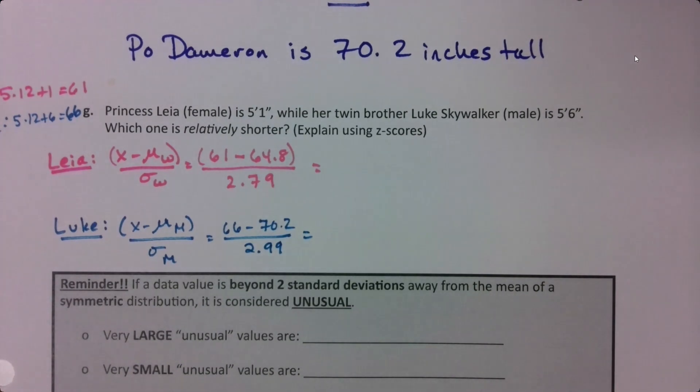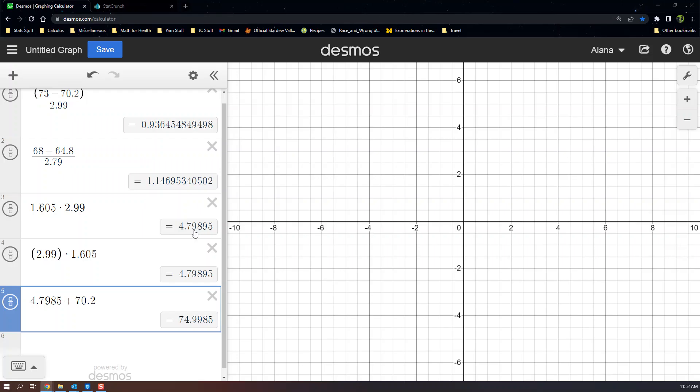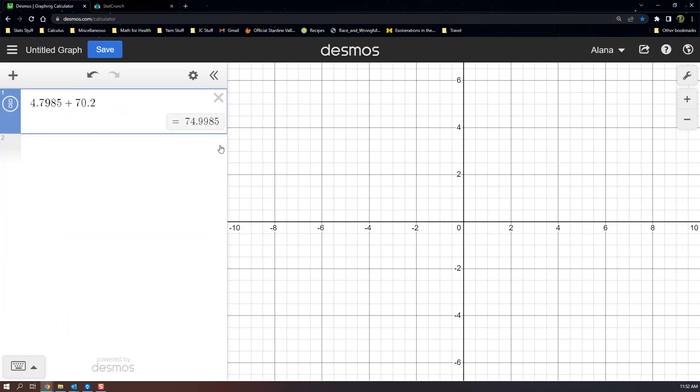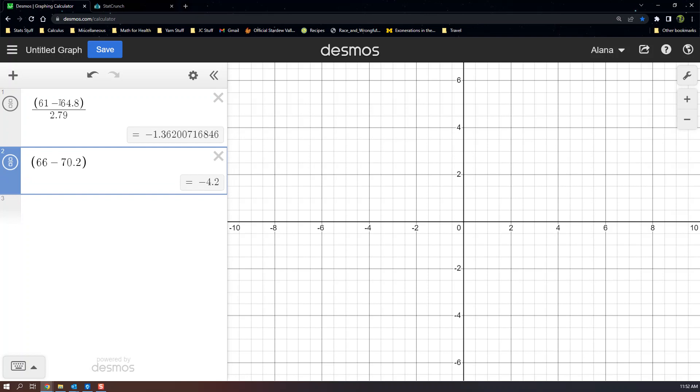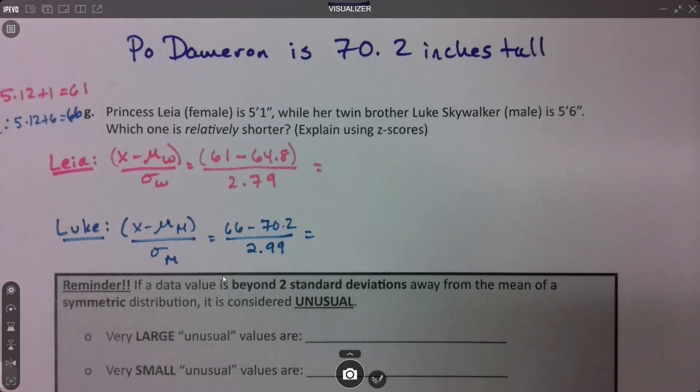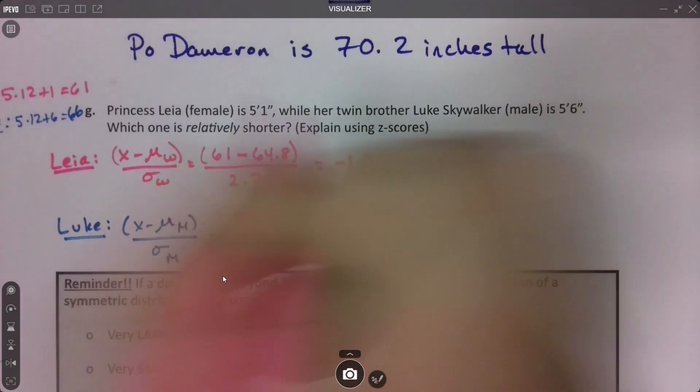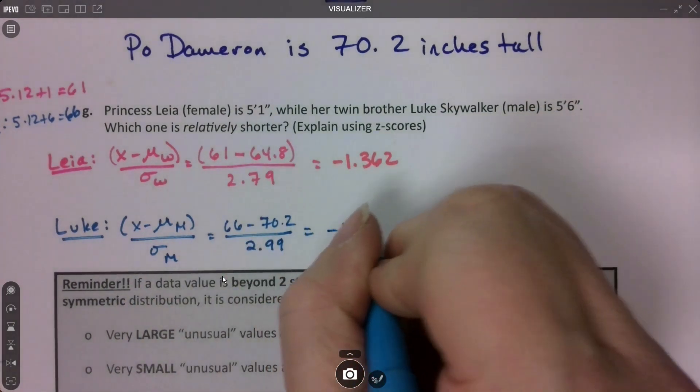Let's go find these values in Desmos. 61 takeaway 64.8, divided by 2.79. There's Leia. And there's Luke. So she's negative 1.362 and he's negative 1.405.